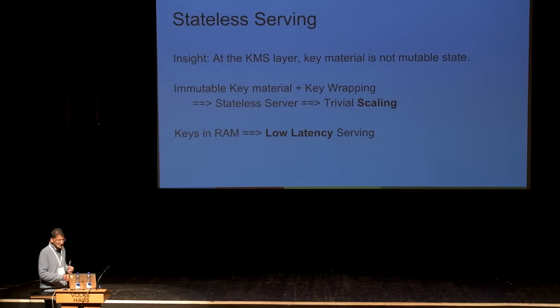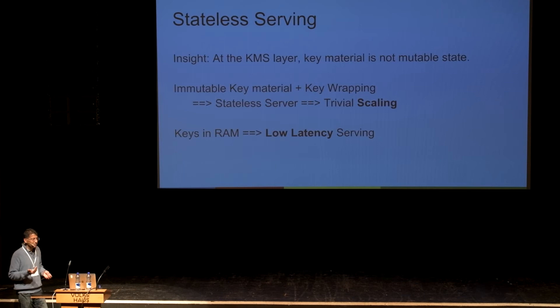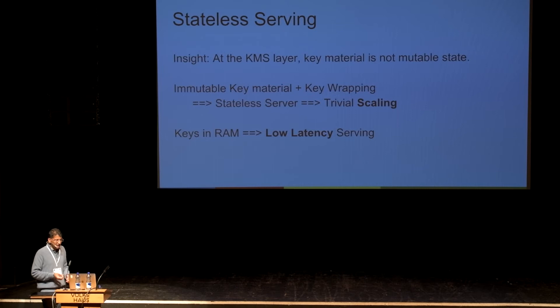Combined with a couple of insights: if we roll changes out over at least a week at the KMS layer, the key material is no longer mutable for that period. Combined with key wrapping at the KMS layer, we end up with a stateless server for that week, which allows us to scale trivially. It's very easy to bring up 10,000 instances with no coordination required between them. And because of wrapping, at the KMS layer we manage on the order of tens of thousands of keys, which we can hold in RAM — which means we can also meet our latency budget.